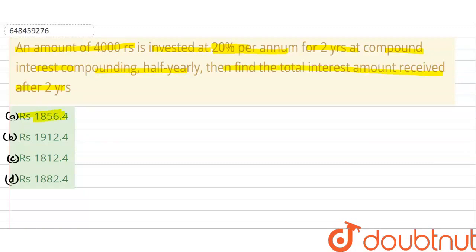Option A is 1,856.4 rupees, option B is 1,912.4 rupees, option C is 1,812.4 rupees and the last option D is 1,882.4 rupees.